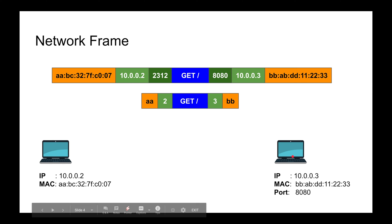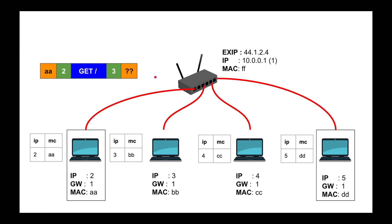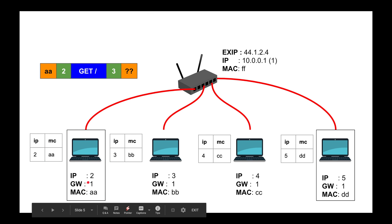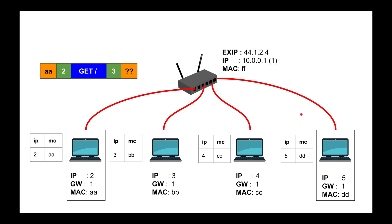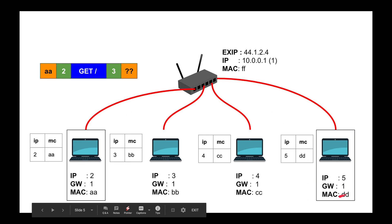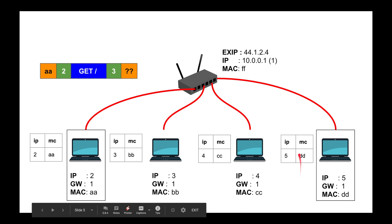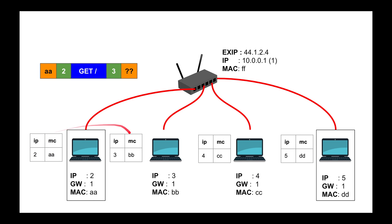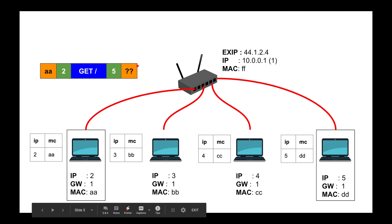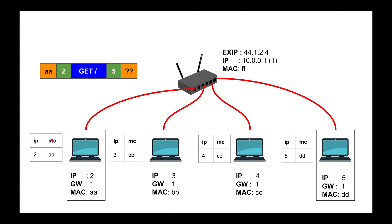I didn't know the MAC address for the destination machine, so I did an ARP request to find it. Here's the example configuration: my machine is IP 10.0.0.2 and I want to connect to the web server at 10.0.0.5. The gateway is the router — I have its IP and MAC address. Each machine's ARP table has one entry initially — itself — so IP 2 maps to MAC AA, IP 3 to BB, and so on. I want to make a GET request to machine 5.